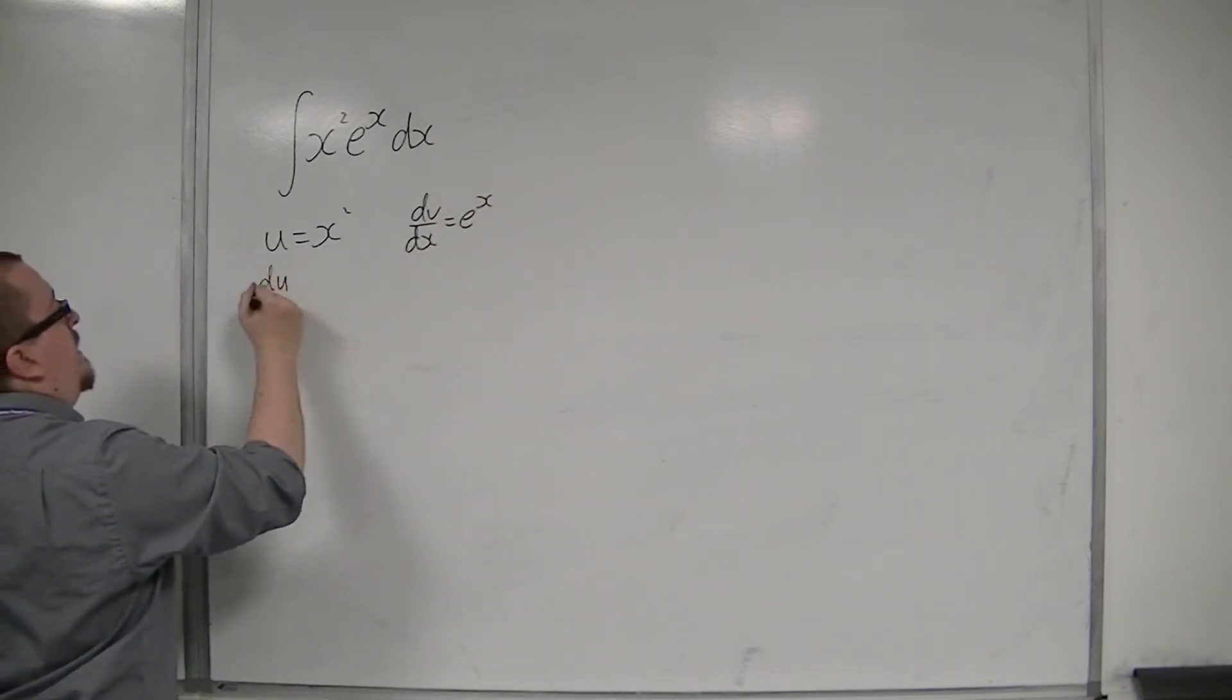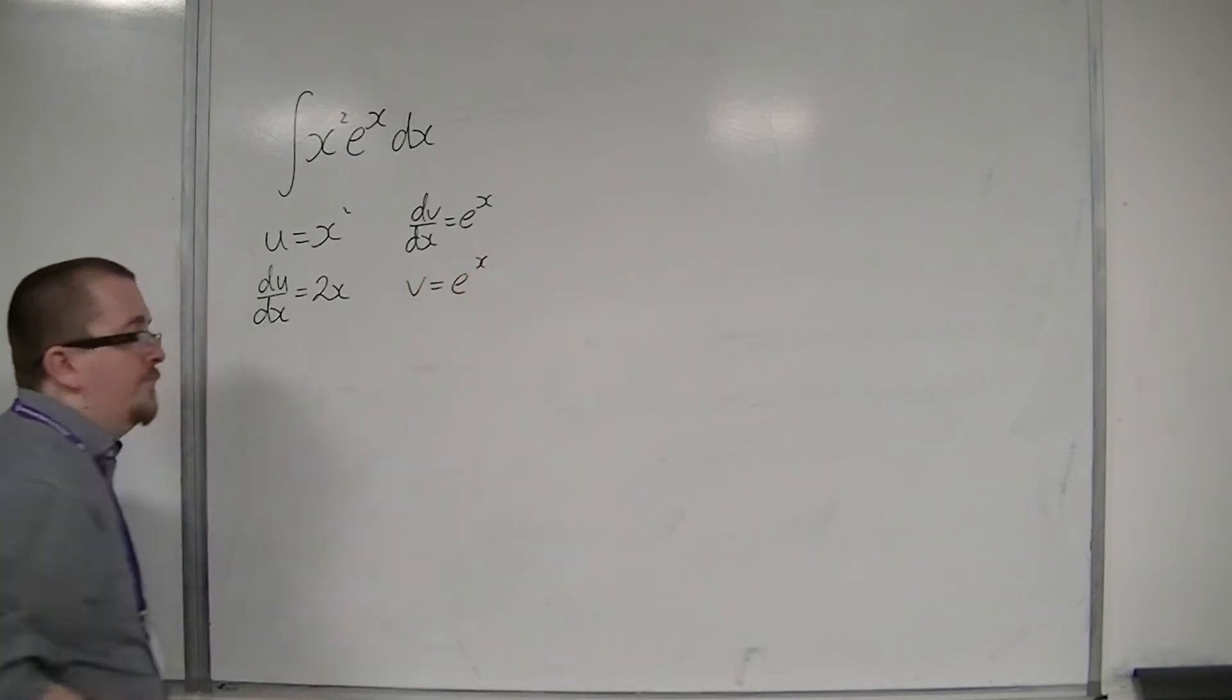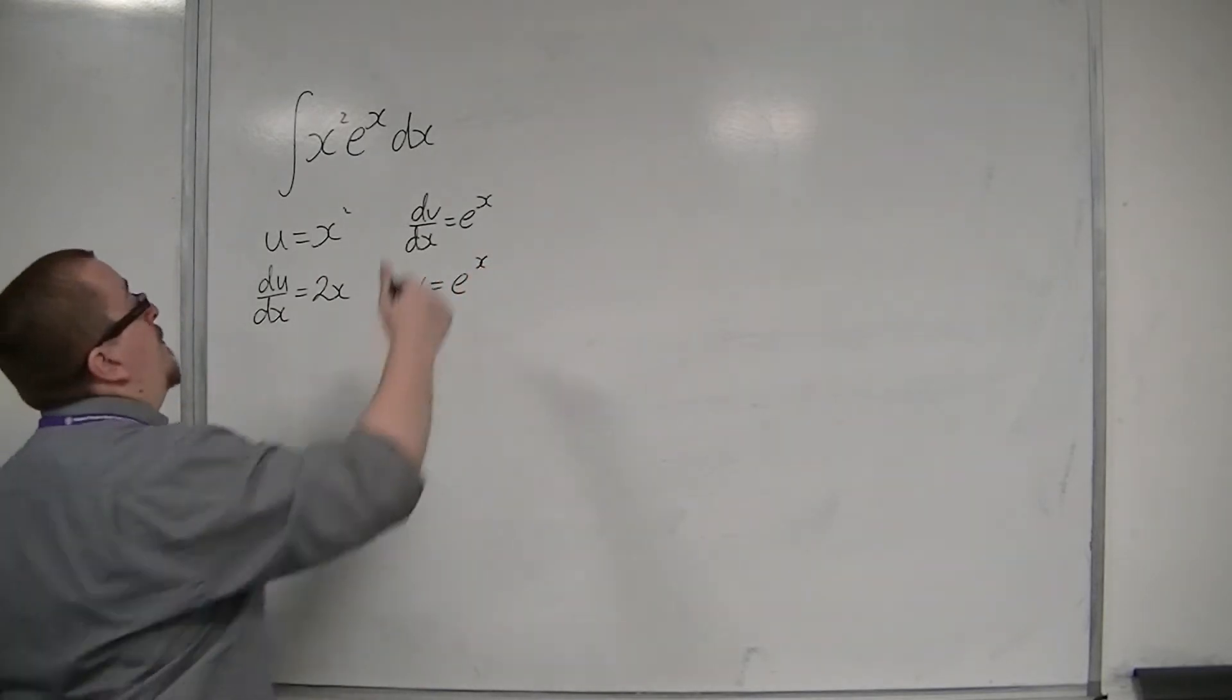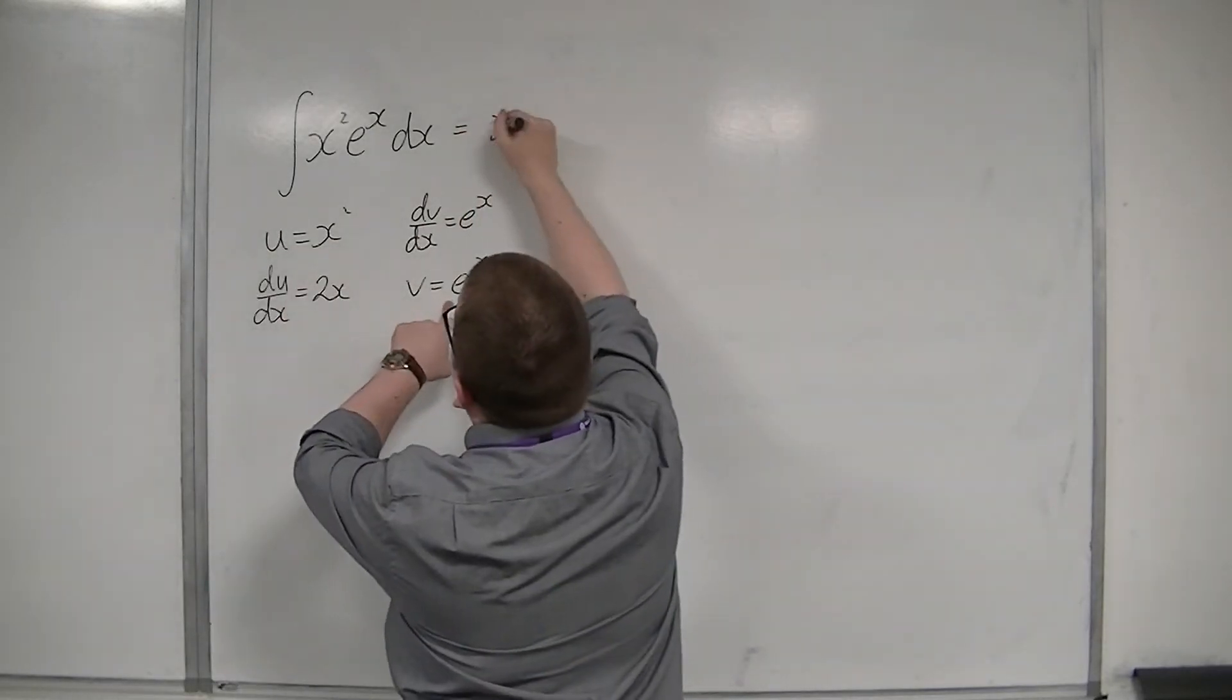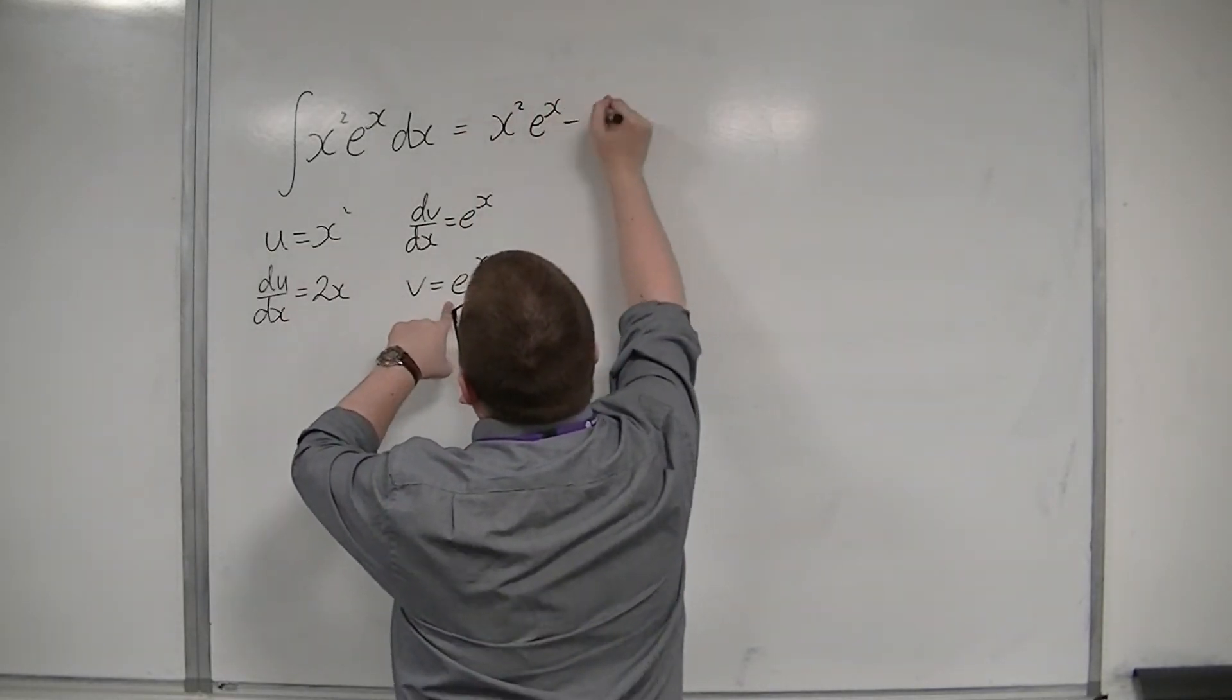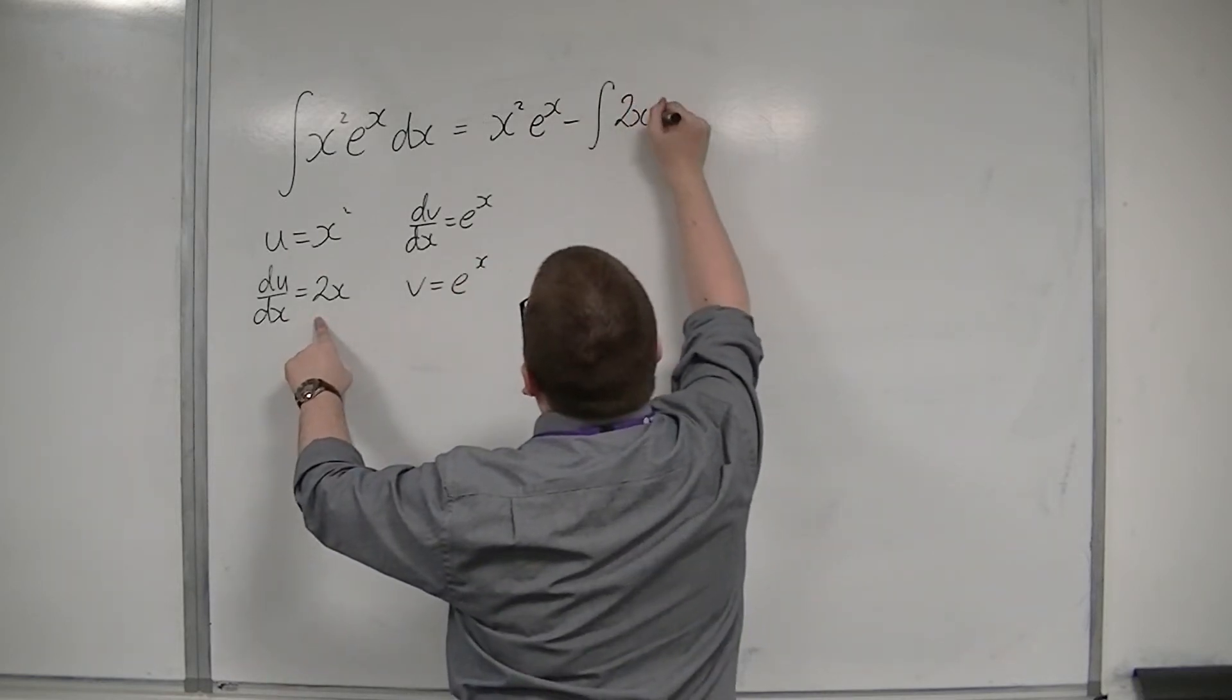So du by dx is 2x, and v is e to the x. So using integration by parts, this must be equal to u times v, so x squared e to the x, take away the integral of v du by dx, so 2x e to the x dx.